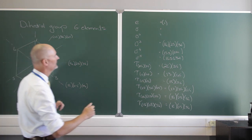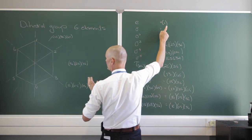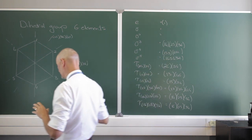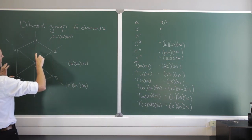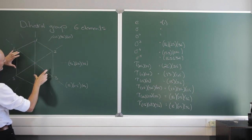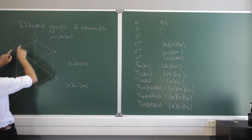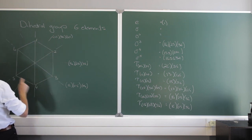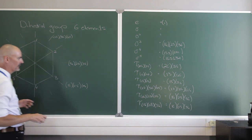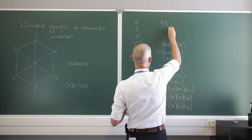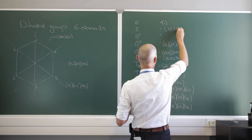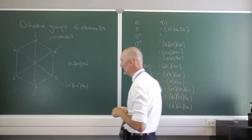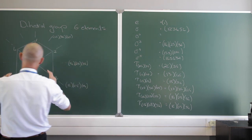Number 1 is very simply: we do nothing. 1 stays at 1, 2 stays at 2, 3 stays at 3. Let's rotate it by 60 degrees. If I rotate it by 60 degrees, you won't know the difference if the numbers are not there. But 1 is going to go to 2, 2 to 3, 3 to 4, 4 to 5, 5 to 6, and 6 back to 1. That is that permutation — one rotation through 60 degrees.